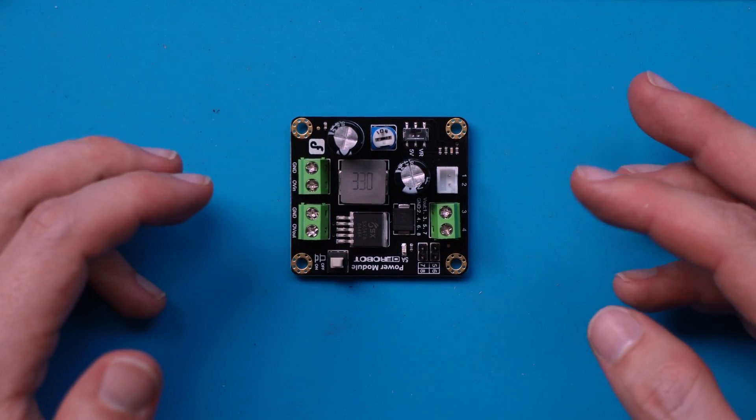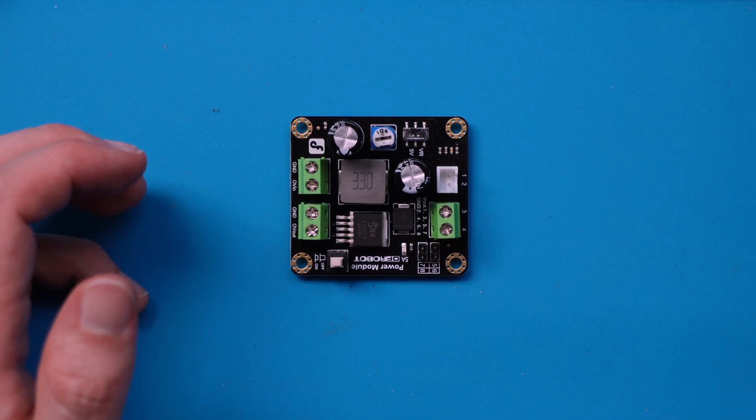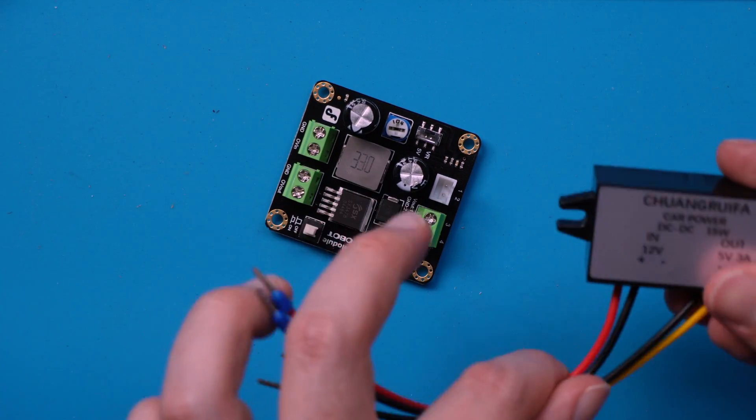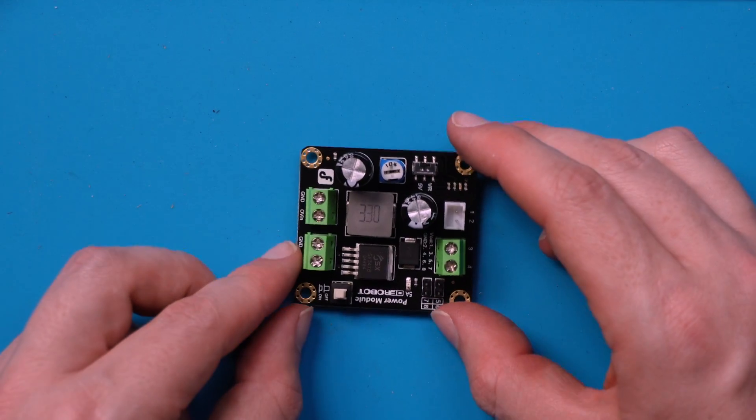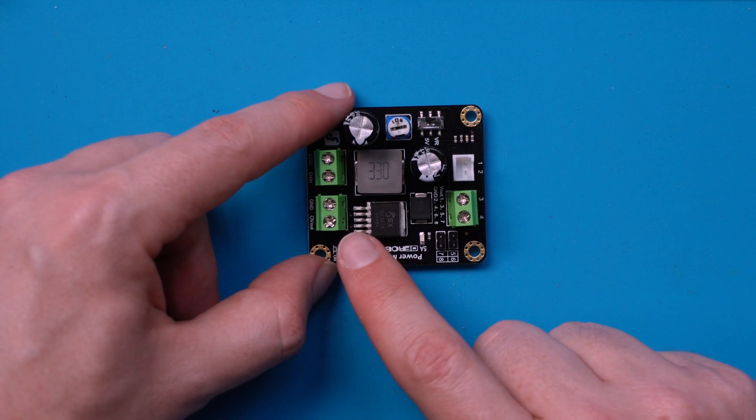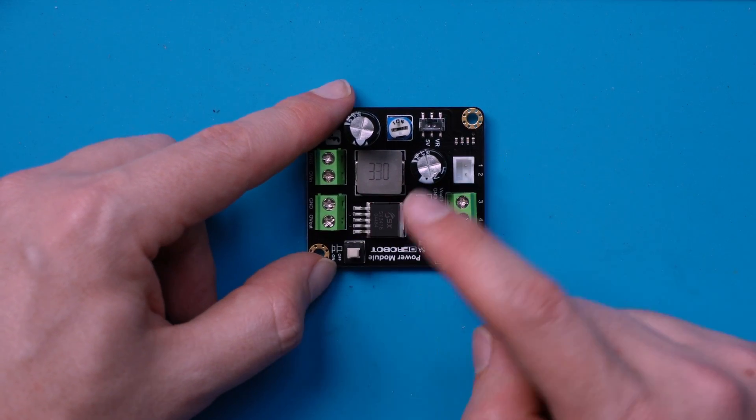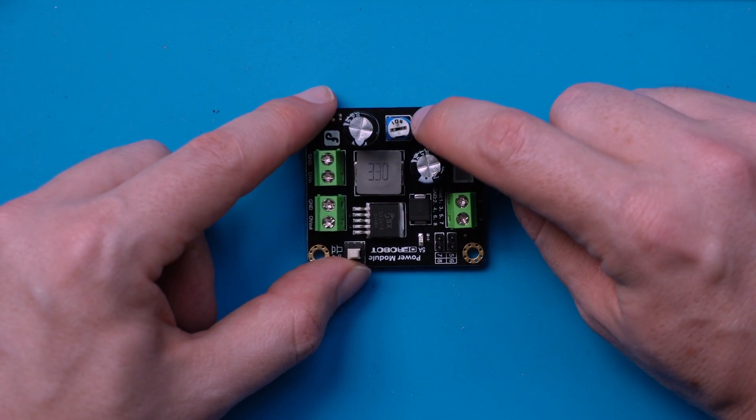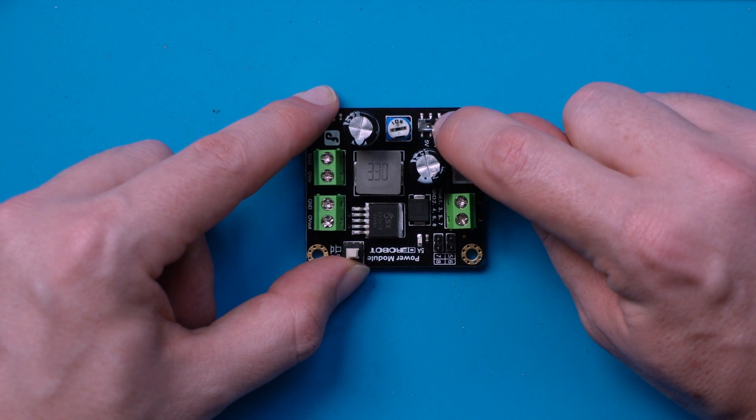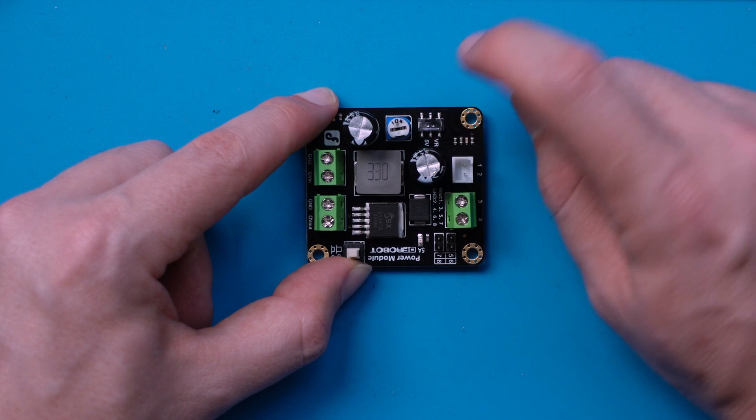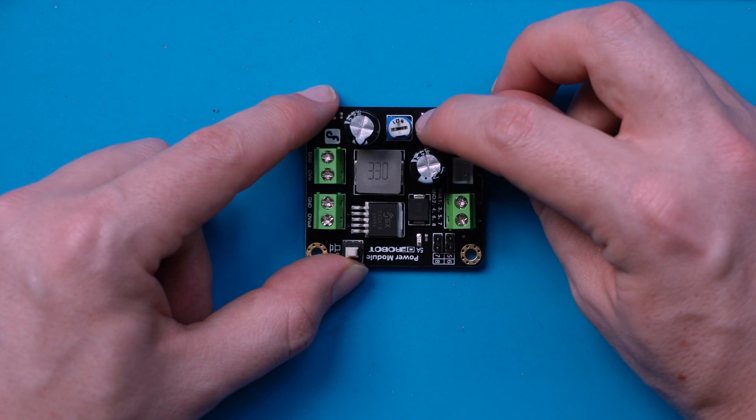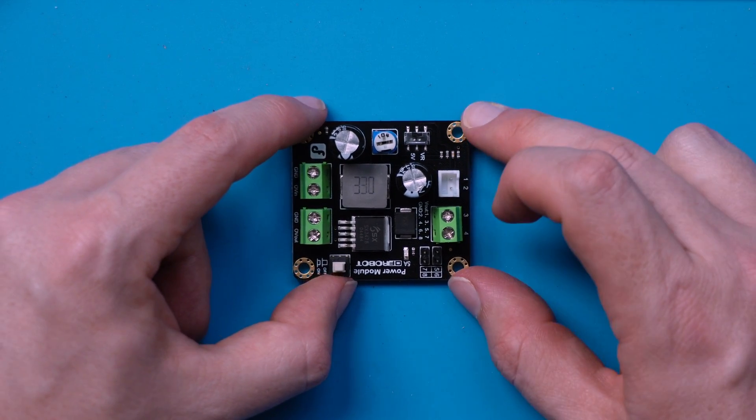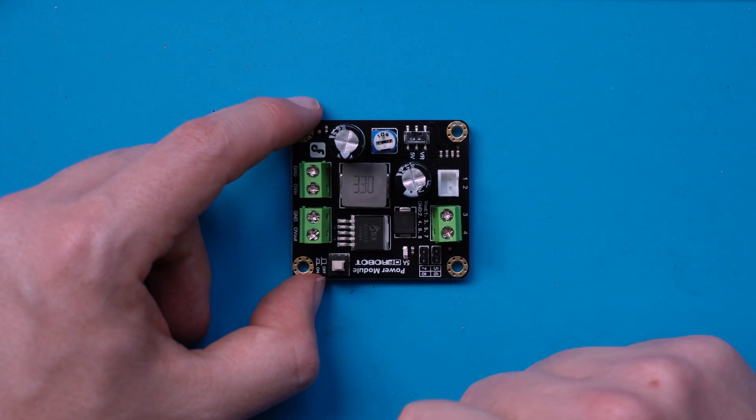Now this regulator also has a couple of other interesting things going on. Yours might be a little bit more boring, like this one that's just got two leads in and two leads out. But for this one I've got here, it's also got an on-off switch that you can use to turn it on and off. And then it's got this other little switch that lets you switch it between being 5 volts and being a variable voltage that you can set using this trim pot with a screwdriver. Now we just want 5 volts, so I'm going to leave that switch in the 5 volt position and I'm going to leave it on.